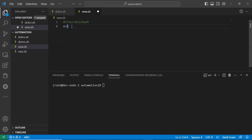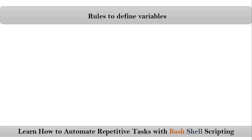While defining your variable there are some very important rules. The very first one is: a variable name should contain only lowercase or uppercase alphabets, numbers 0 to 9, and underscore characters. Other than these groups, you should not use any character in your variable name. Let me explain this on the terminal.